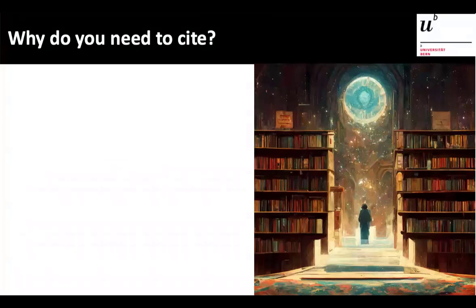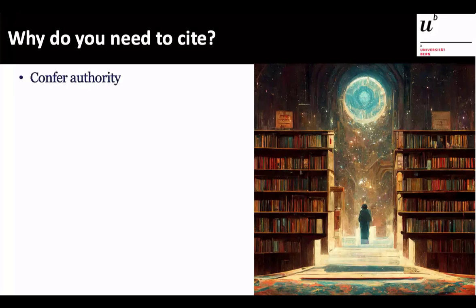I want to start with the basic question of why you need to cite, because this is something we often do without thinking about. If we're thinking about why we need to cite when we're reading, it helps us organize the citation process for later. The number one reason is that we don't know everything ourselves and haven't done all the research ourselves. So we cite other people to confer authority on our words when we make claims about things we aren't the expert on.